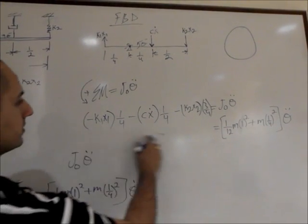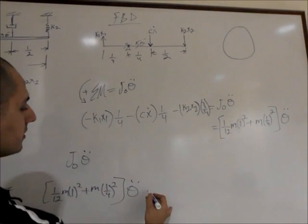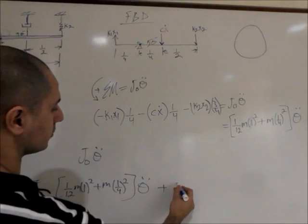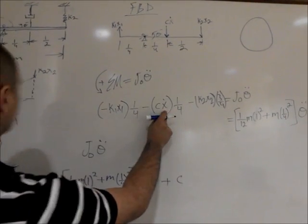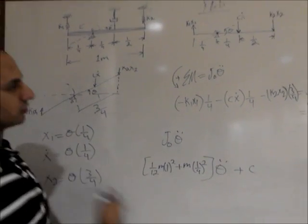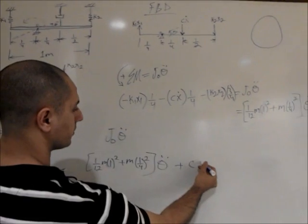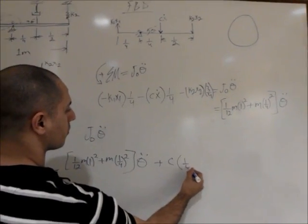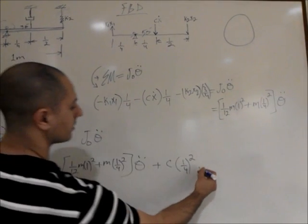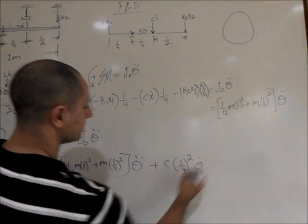Let's take this right here to the other side. Now what we have here will become c and x dot. We said x dot is actually theta times one-fourth, so this would become one-fourth squared times this one right here, theta dot.